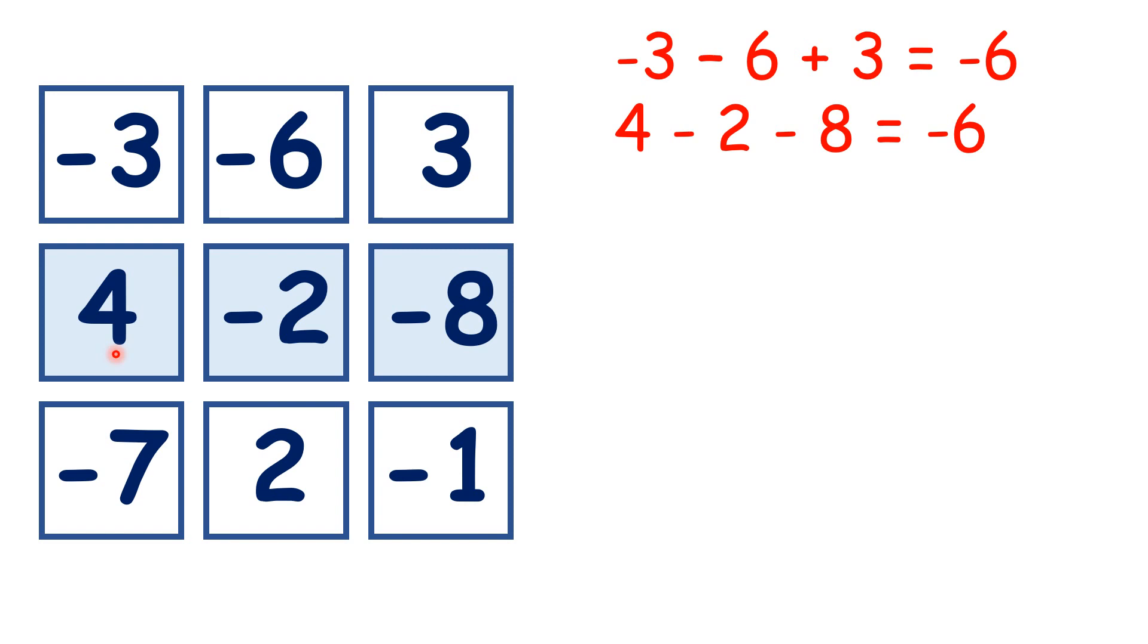For this second row, 4 minus 2 is 2, then 2 minus 8 is minus 6. Here, minus 7 plus 2 is minus 5, and then minus 5 minus 1 is minus 6.